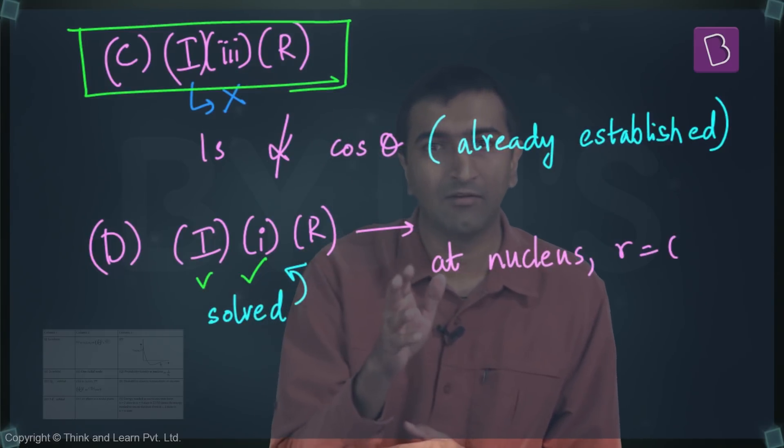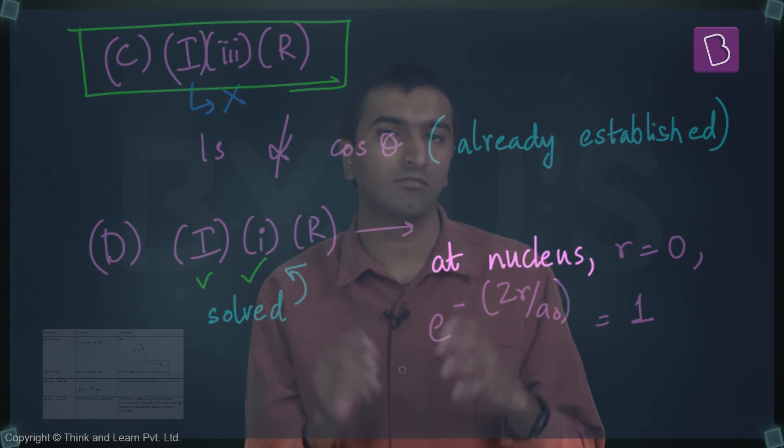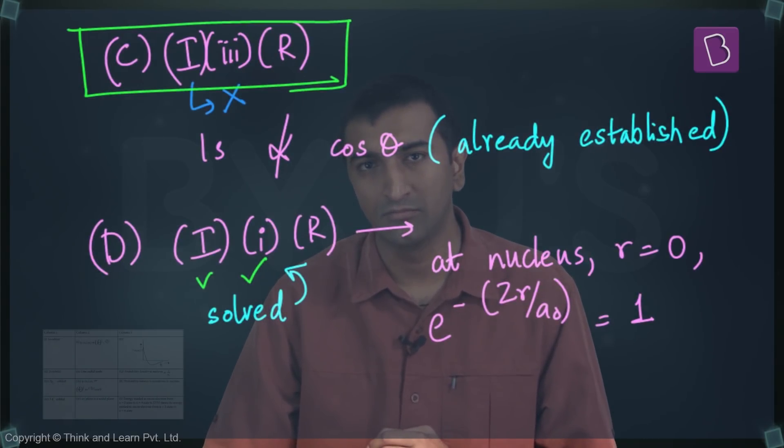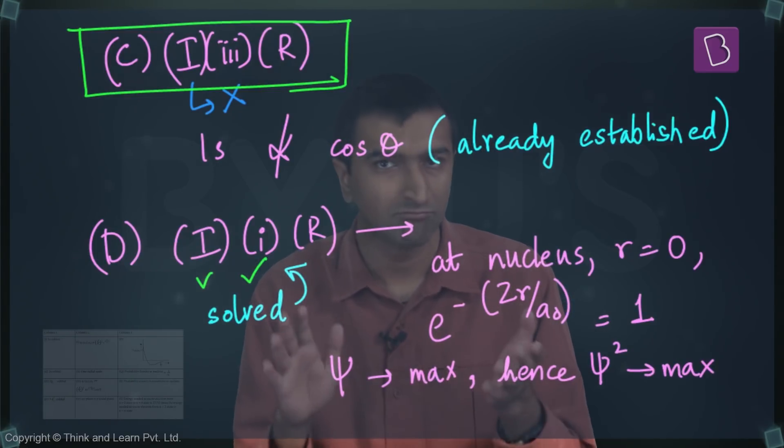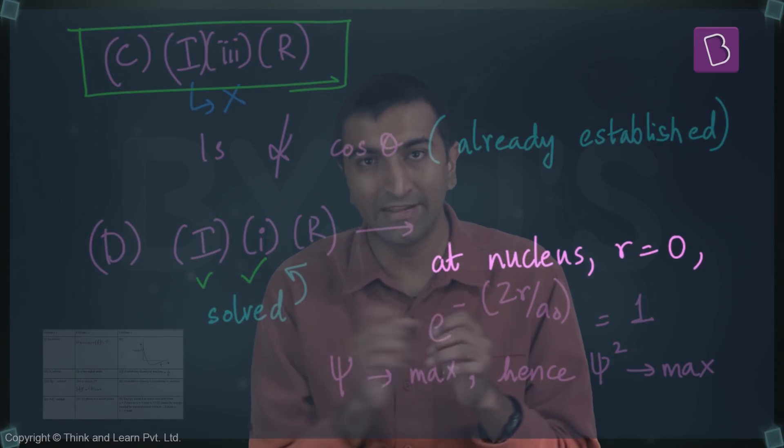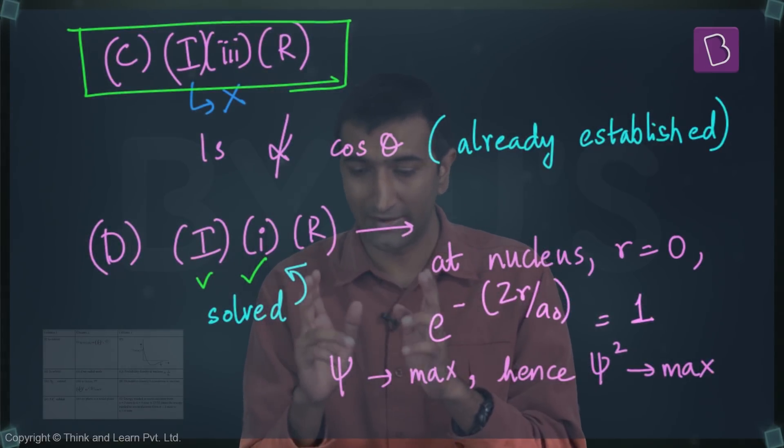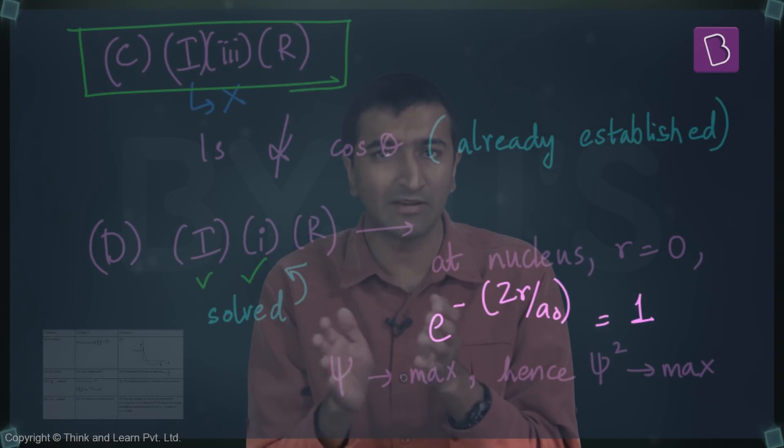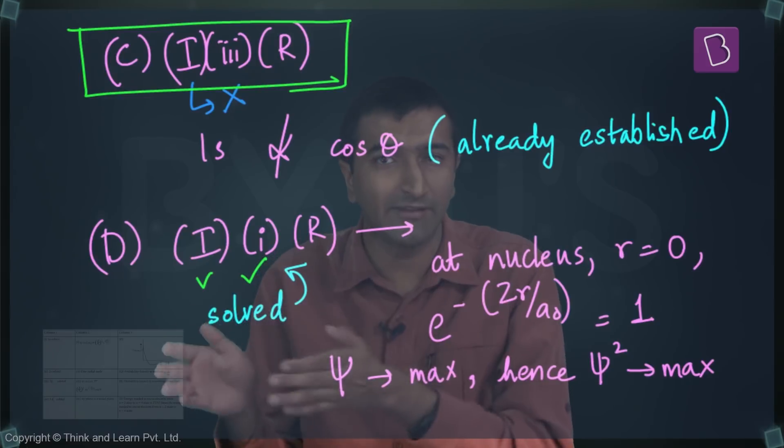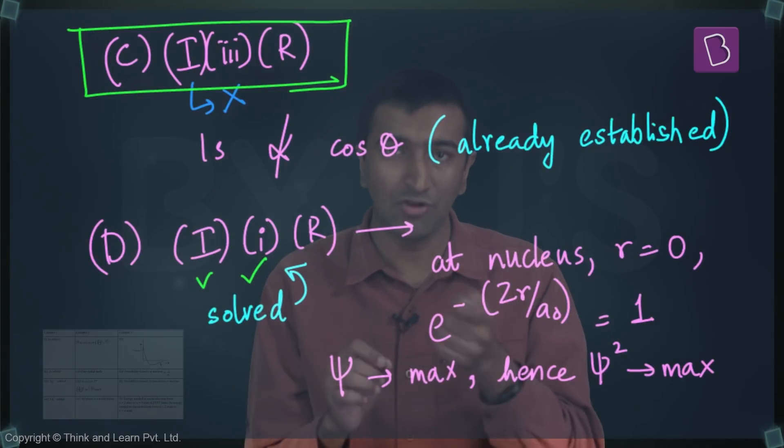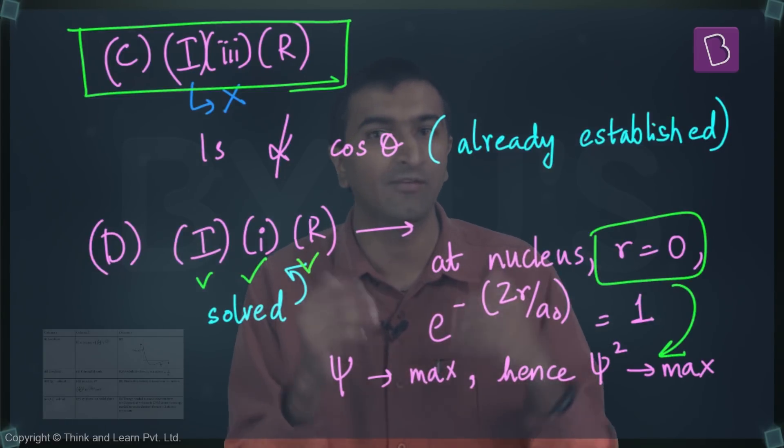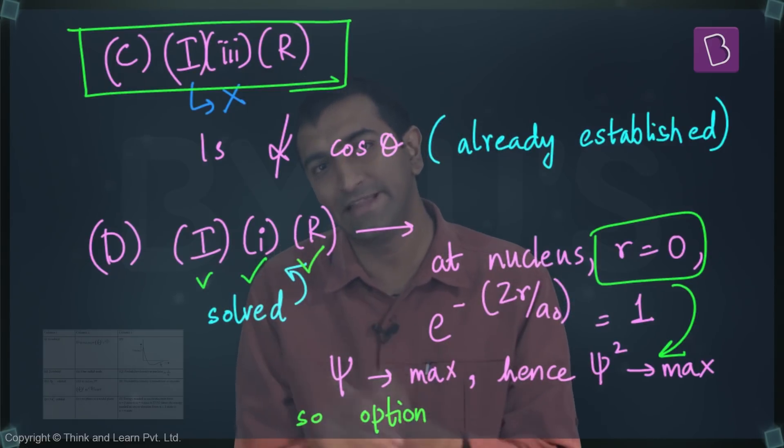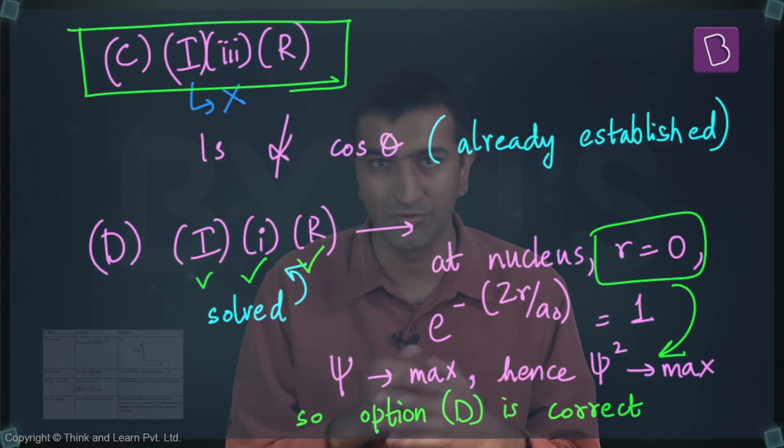Now R is an interesting thing. It says that probability density is going to be the maximum near the nucleus. Is this correct? Probability density is ψ², right? So if ψ is maximum, ψ² will be maximum, makes sense. Near the nucleus, r tends to zero, which means this part, e to the power minus thing, this whole thing will become e⁰ which is 1, and that is the maximum value of the function ψ. Any other value of r, the value of ψ falls, and if ψ falls, ψ² will fall. So if ψ is the maximum value, ψ² is the maximum value. ψ² is probability density, and hence this is correct. This option is correct as well. So your answer was option C, which was incorrect.